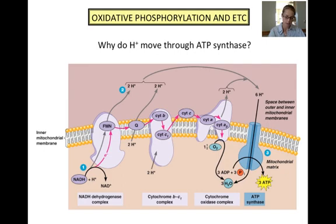Hydrogen ions move through the ATP synthase because of a difference in the hydrogen ion concentration on either side of the inner mitochondrial membrane. The hydrogen ions are more concentrated in the space between the outer and inner membranes than they are in the inner mitochondrial matrix. As a result, they diffuse along their concentration gradient from an area of high concentration to an area of low concentration, moving through the ATP synthase.